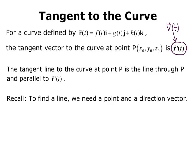Recall that to find a line, we need a point and a direction vector. The point (x₀, y₀, z₀) is going to be r of t₀. So you just take whatever time you're given and plug it in to your position function. That will give you a point on the curve.